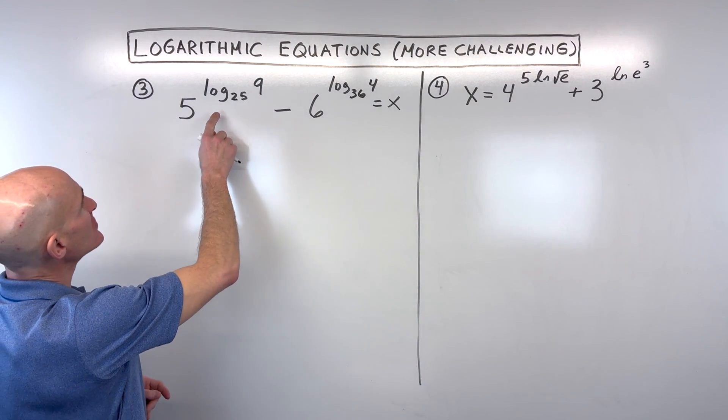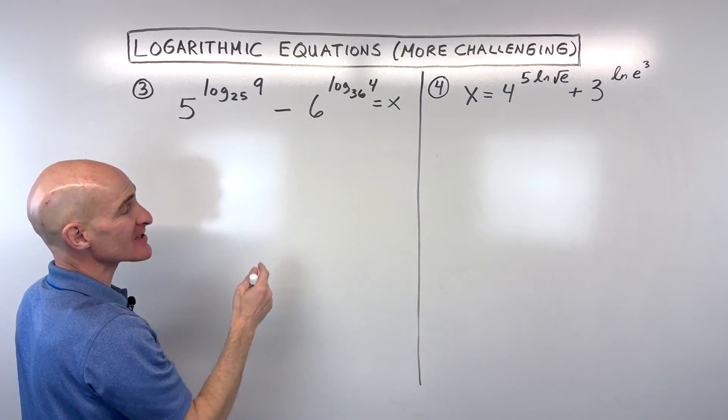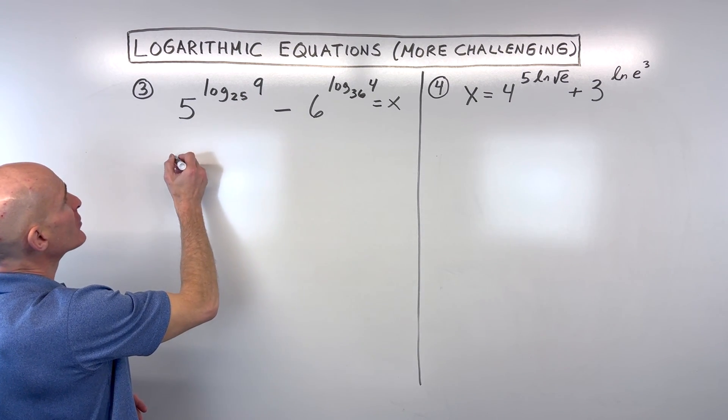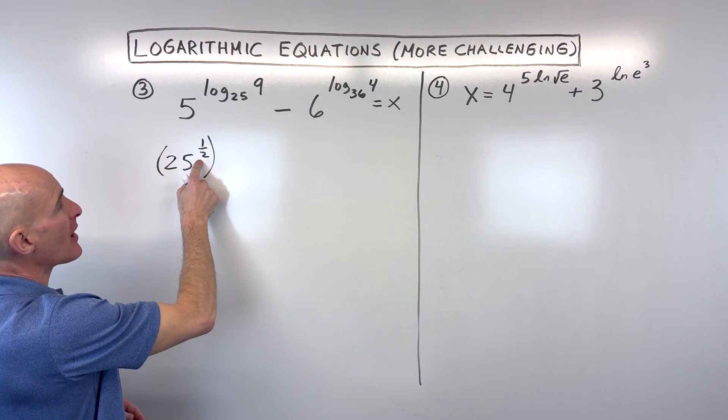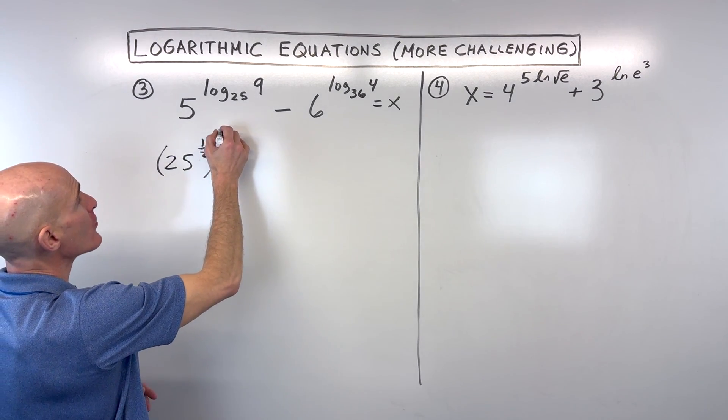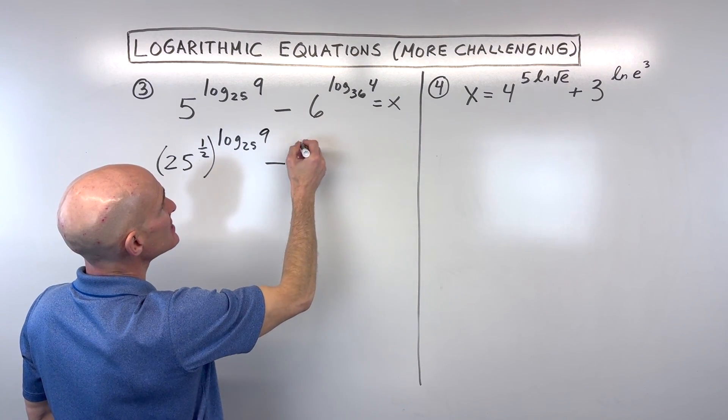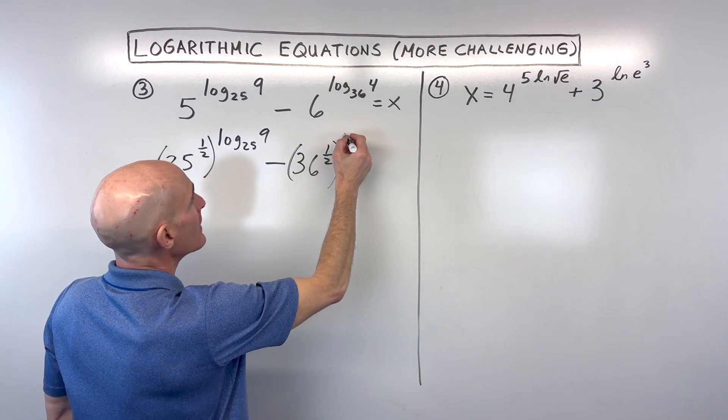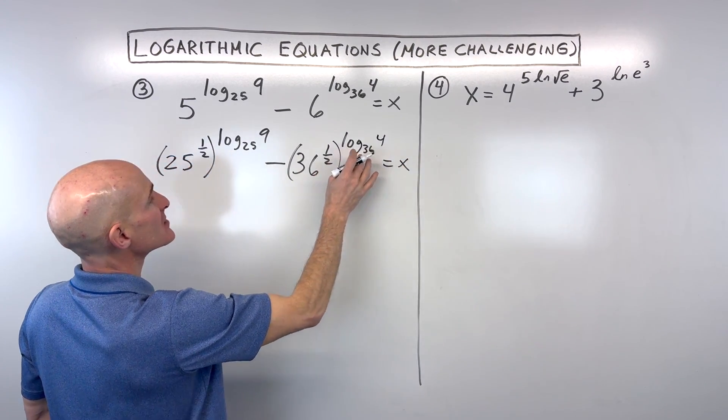Well, this is a challenging one, but notice that we've got 25 and 5. That seems to be very interesting. And we've got 36 and 6. That seems to be very interesting. Let's do a little bit of rewriting here. 5, we can write that as 25 to the 1 half power, because the 1 half power is like the square root, and the square root of 25 is 5. So we're not changing the problem. We're just kind of rewriting it, putting it into a different format. Over here, 36 to the 1 half power is the same thing as 6, because the square root of 36 is 6. And you're probably saying, well, why are we doing that? And you'll see in just a moment here, we're trying to get these bases to be the same.